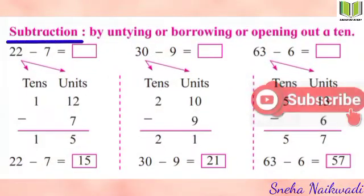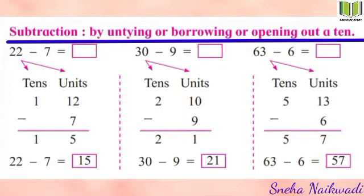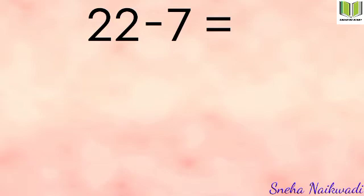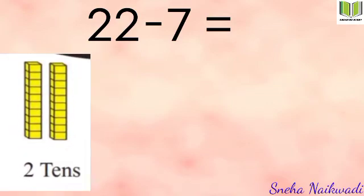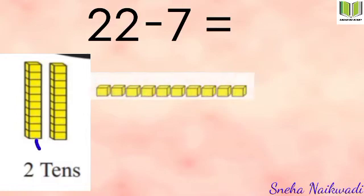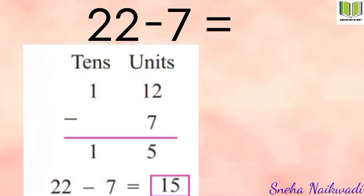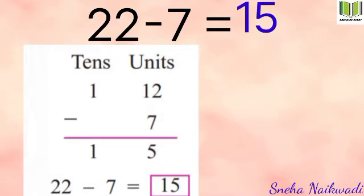Now let's solve subtraction sums by untying, borrowing, or opening out a ten. First: 22 minus 7. We cannot subtract 7 from 2, so we untie one bundle of 10. One ten remains on the tens place, and we write 12 in the units place. Now 12 minus 7 equals 5, and one ten remains. So 22 minus 7 equals 15.